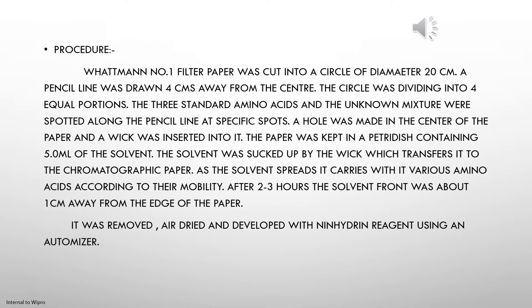This is the procedure for separating amino acids using paper chromatography. A Whatman number 1 filter paper is cut into a circle of diameter about 20 cm for circular chromatography. Using a pencil, a line is drawn 4 cm away from the center, and the circle is divided into 4 equal portions. In 3 of these portions, known amino acids are spotted, and the unknown mixture is spotted along the pencil line at a specific spot. A hole is made in the center of the paper and a wick is inserted into it.